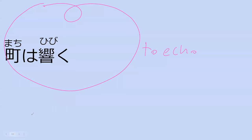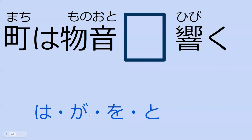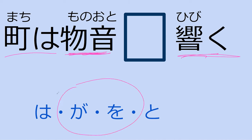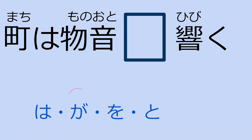So this is our next verb — this means 'to echo.' What do you think 'machi wa hibiku' means? — The town echoes. — Yes. Next is the word mono oto, which is basically a way to say 'sounds' in general. Mono is 'thing' and oto is 'sound' — so 'thingy sounds.' What particle do you think mono oto gets with hibiku? — Ga. — You're right, it is ga, because there's no real control happening here.